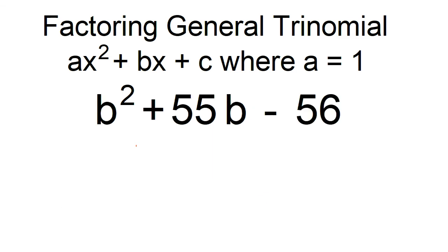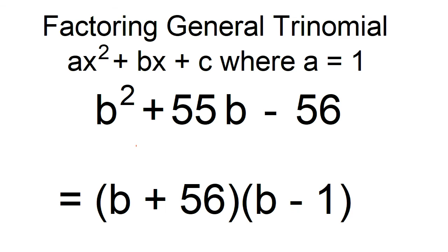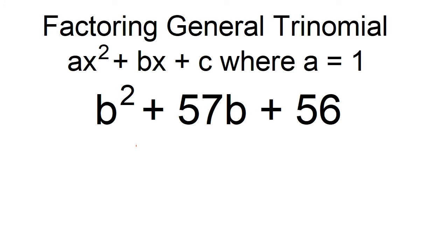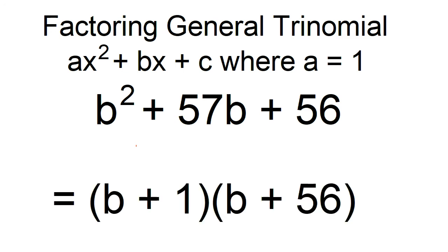Factor b squared plus 55b minus 56. The factors are b plus 56 and b minus 1. Factor b squared plus 57b plus 56. The factors are b plus 1 and b plus 56.